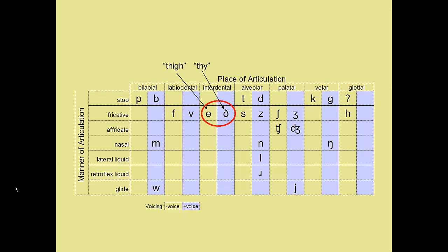The interdental fricatives have unique symbols, but you probably already know the symbol theta from geometry class. Theta indicates the sound that starts the word 'thigh.' This other symbol, that looks like a backward six with a line through it, is the voiced version of theta and is the sound at the beginning of the word 'thy.' Thigh. Thy.